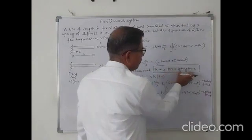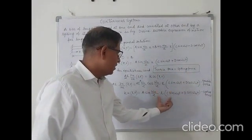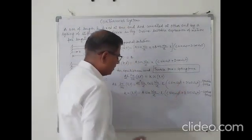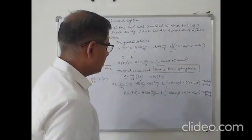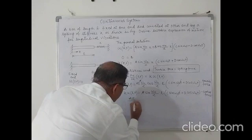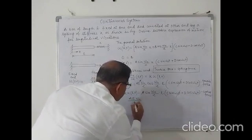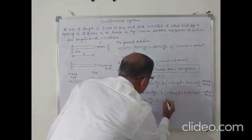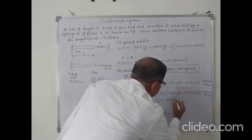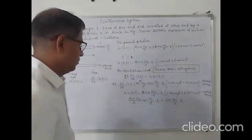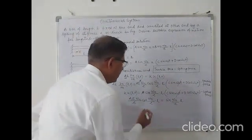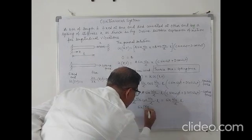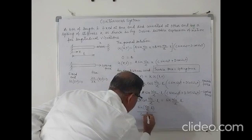Equating the tensile force and spring force expressions, the time-dependent terms [C sin(ωn·t) + D cos(ωn·t)] and the arbitrary constant A cancel from both sides. What remains is: A·E · (ωn/c) · cos(ωn/c · L) = k · sin(ωn/c · L). Rearranging by bringing the cosine term over: sin(ωn/c · L) / cos(ωn/c · L) equals A·E·ωn / (k·c).